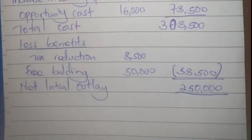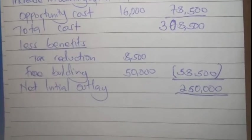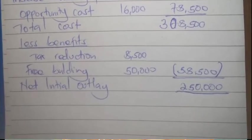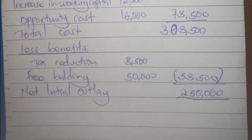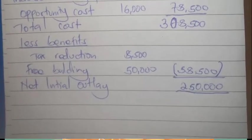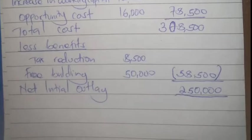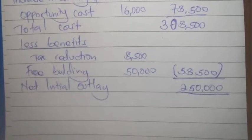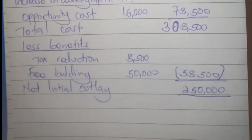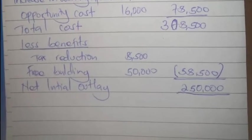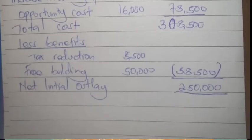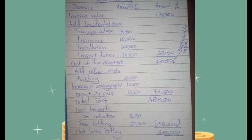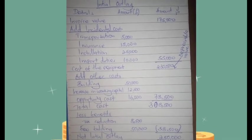Then we subtract benefits. The firm was given an 85% reduction on import duties, which amounts to $8,500 in tax reduction. There is also a free building amounting to $50,000. After subtracting these benefits, we get the net initial outlay, which is $250,000. That is the net initial outlay TTF requires for the expansion.